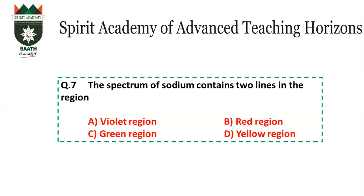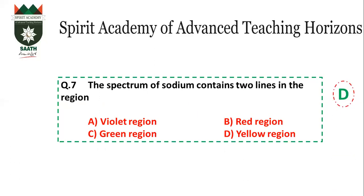Question number 7: Spectrum of sodium line. Sodium has two yellow color lines. This is a memory-based question — you must remember that sodium has two lines. Alkali metals show a doublet line structure in their spectrum. Sodium specifically shows yellow color lines. The answer is D.